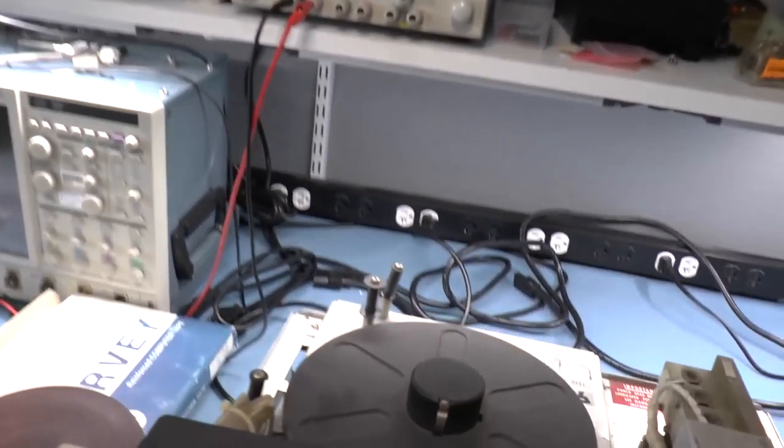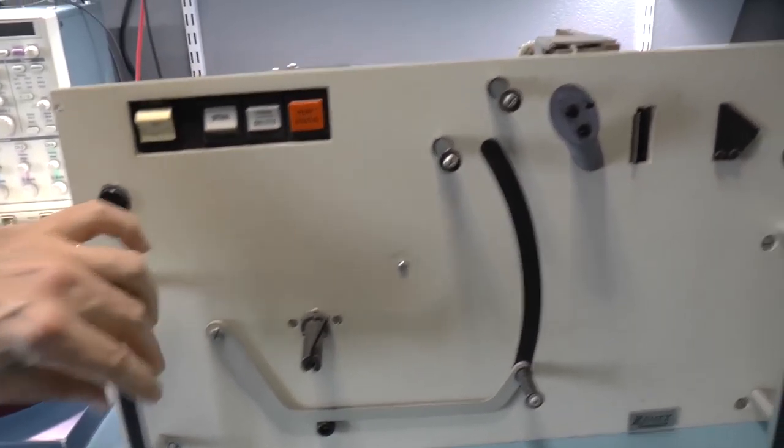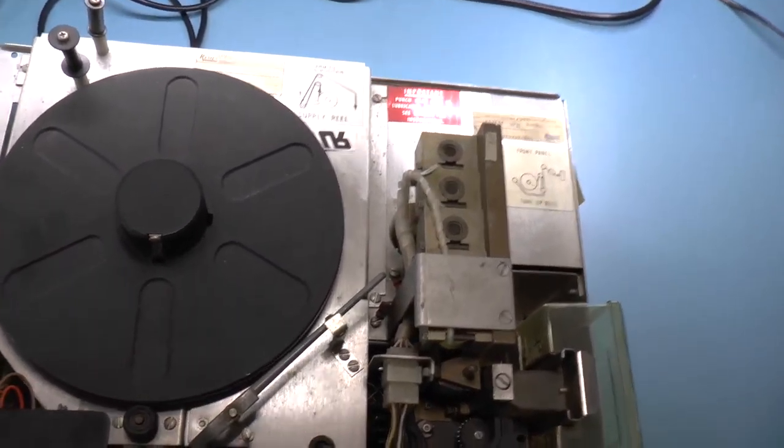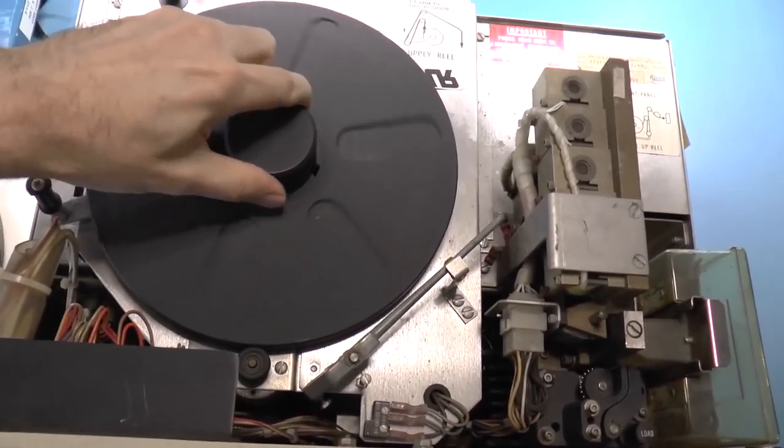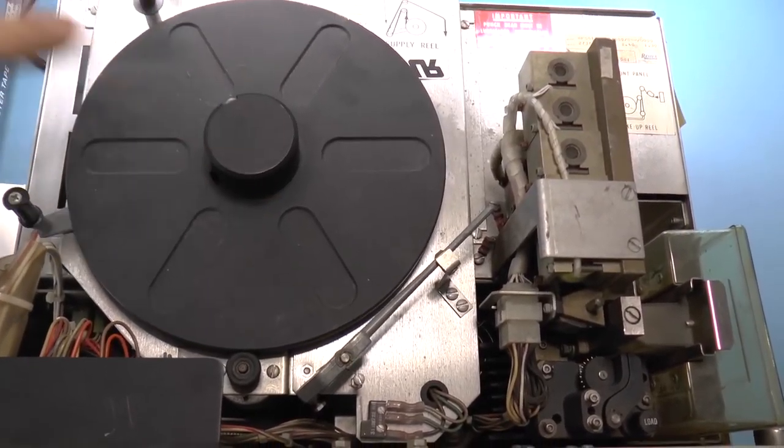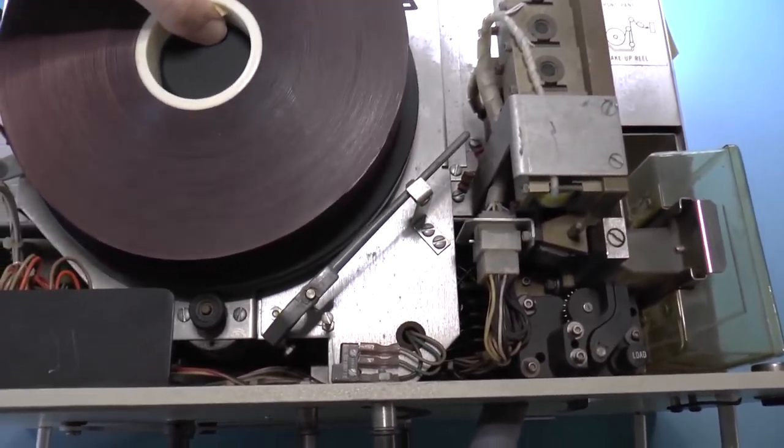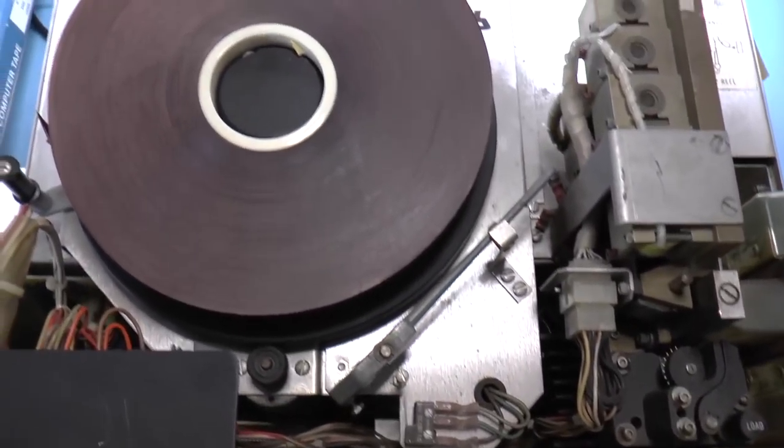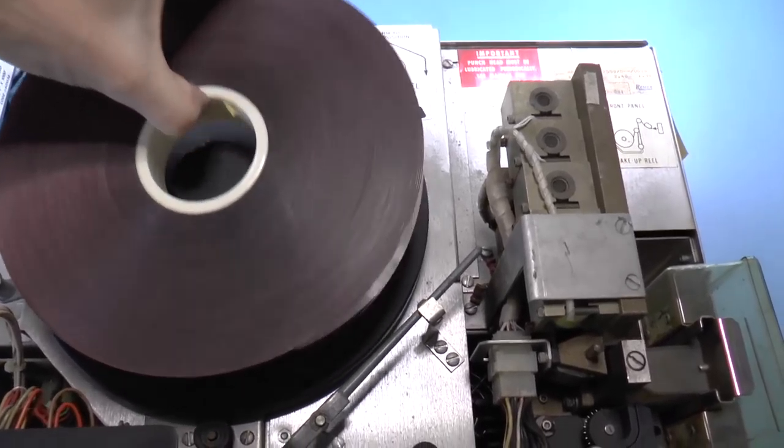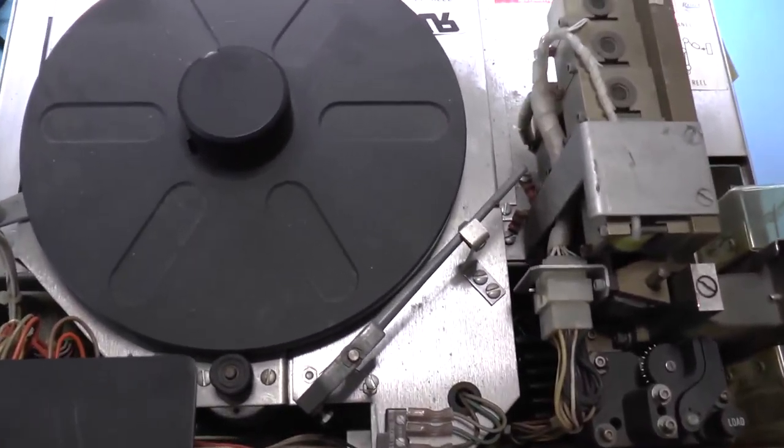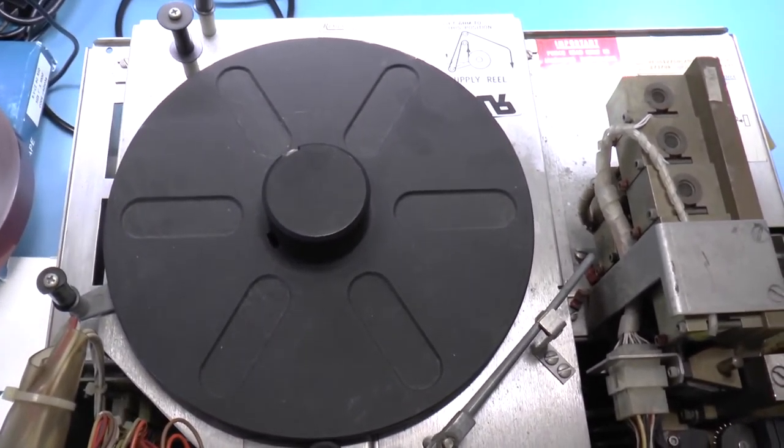So apparently if you look over here this is a rack mount unit so it doesn't have any cover or anything. You can see there's this big reel which I guess is the supply reel. Wow this actually fits pretty well. So this is the right tape. I guess it was a standard spool size.